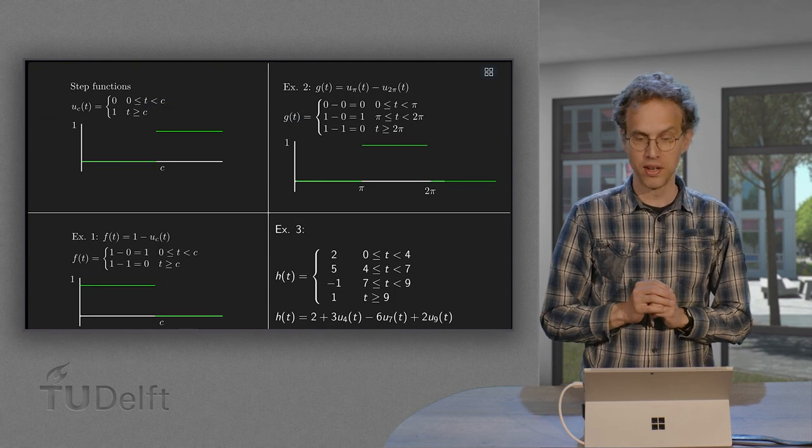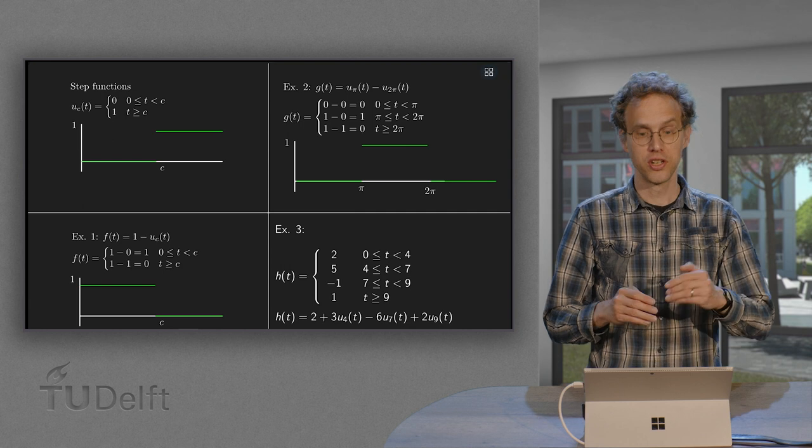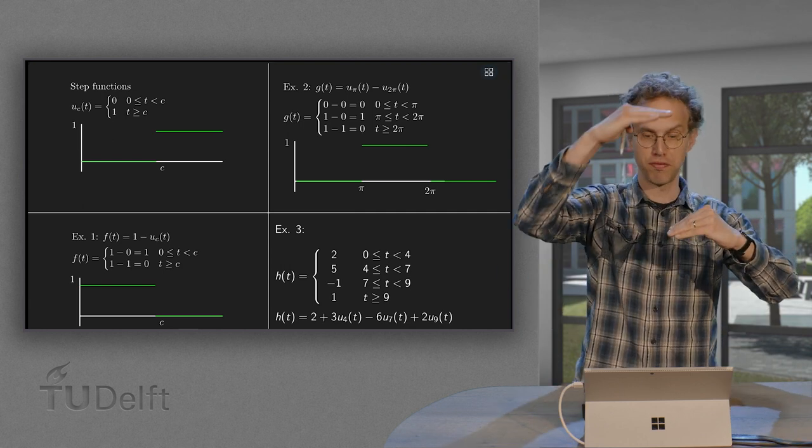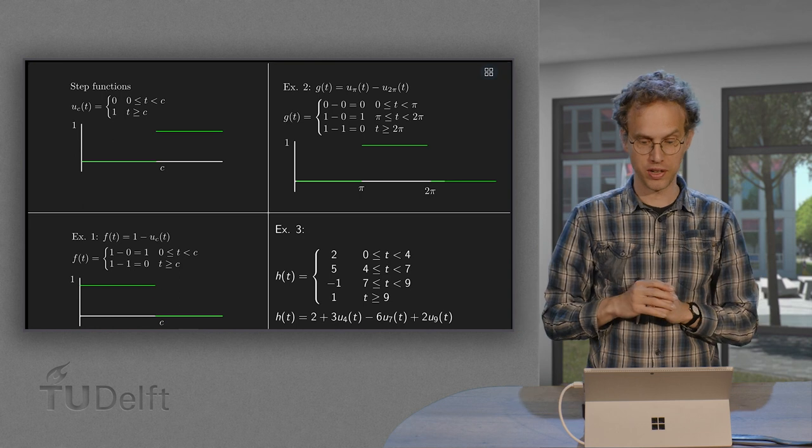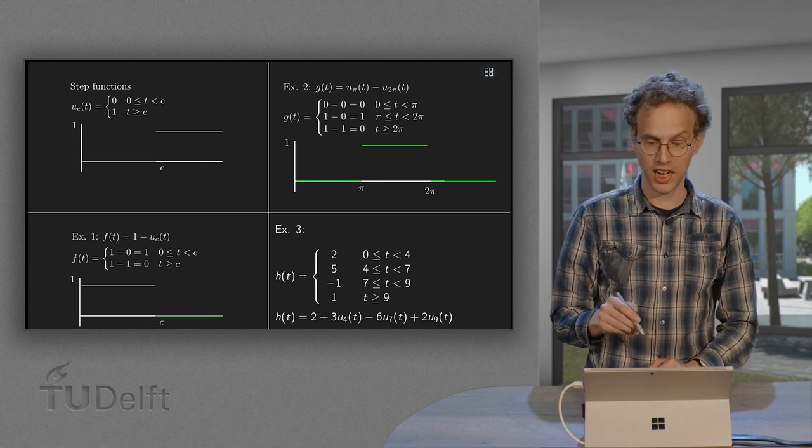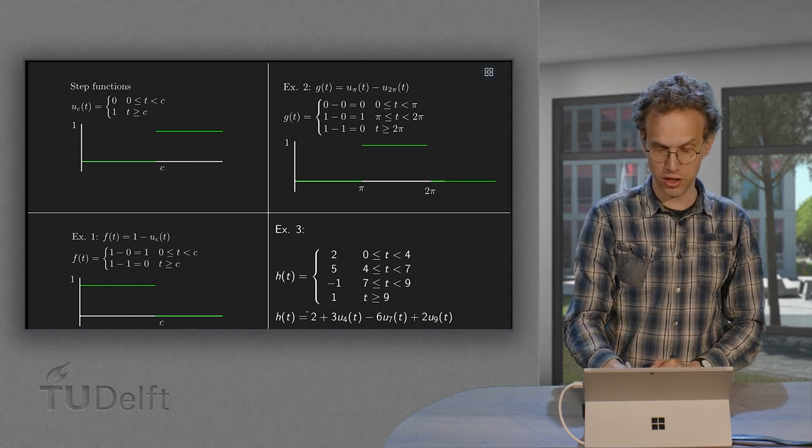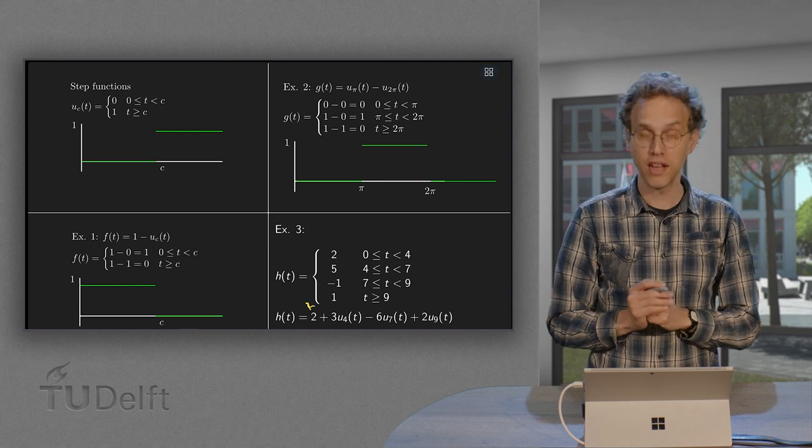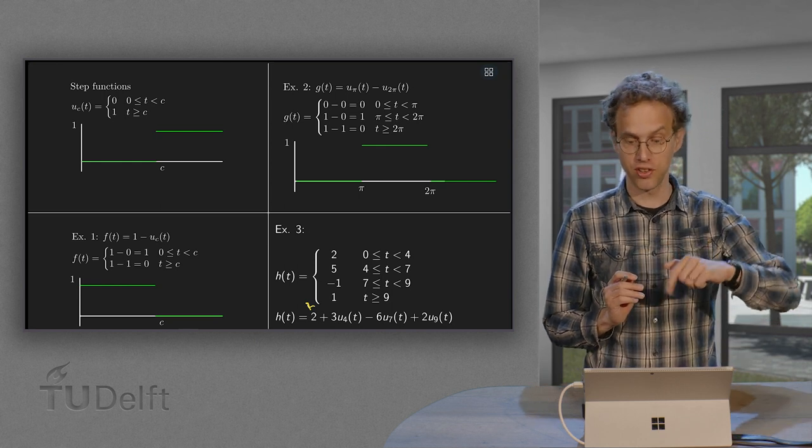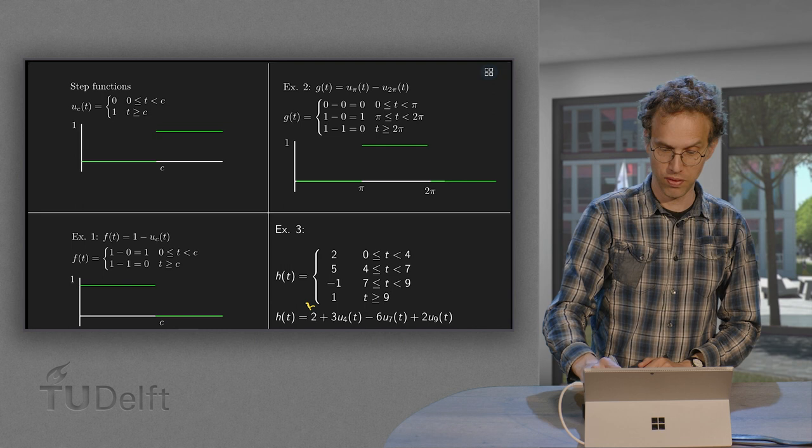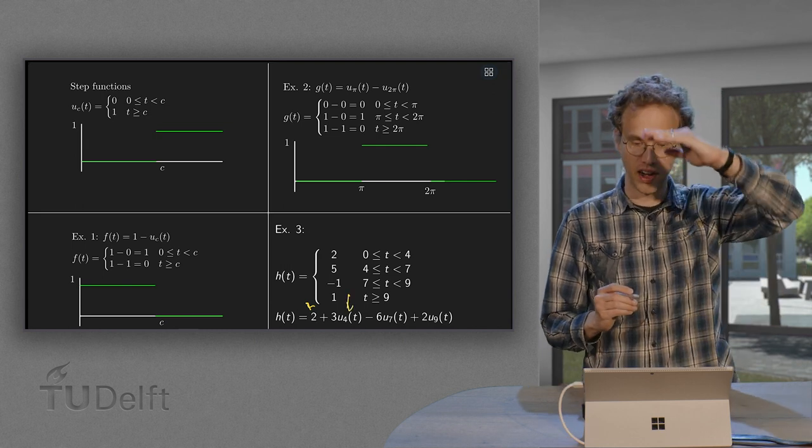So what if we make some nice combination? So we start at 2. Then we jump to 5. Then we jump to minus 1. And then we jump to 1. So how do we form this function h of t? Well, we start at 2. Then we have to jump upwards 3 steps at t equals 4. So we use u 4 of t. So then we are at 5.